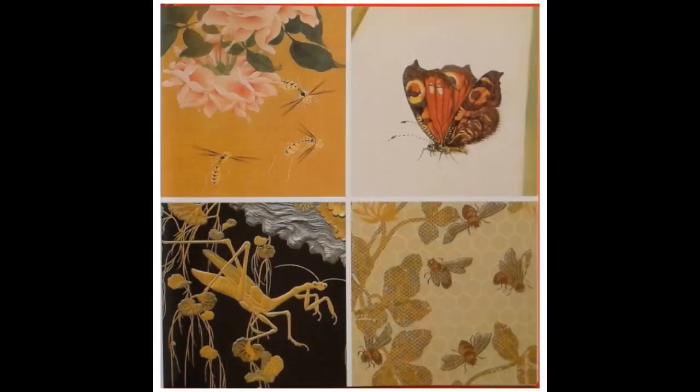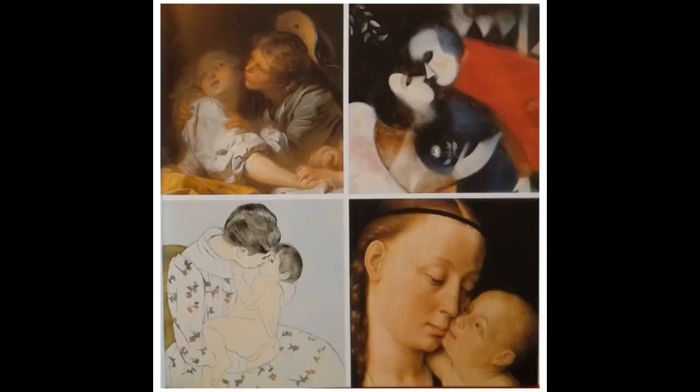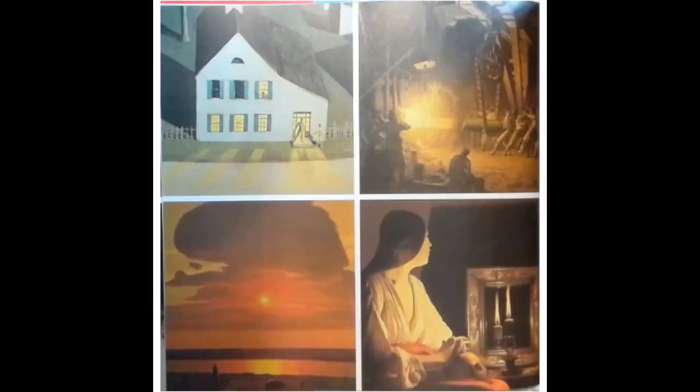I is for Insect. J is for Jewelry. K is for Kiss. L is for Light.